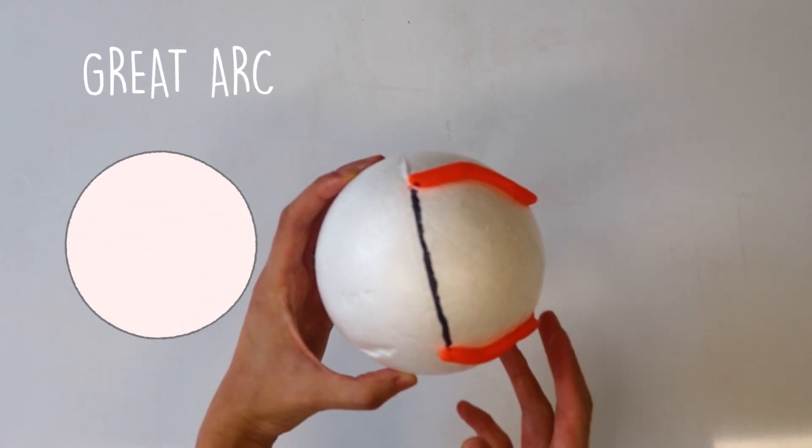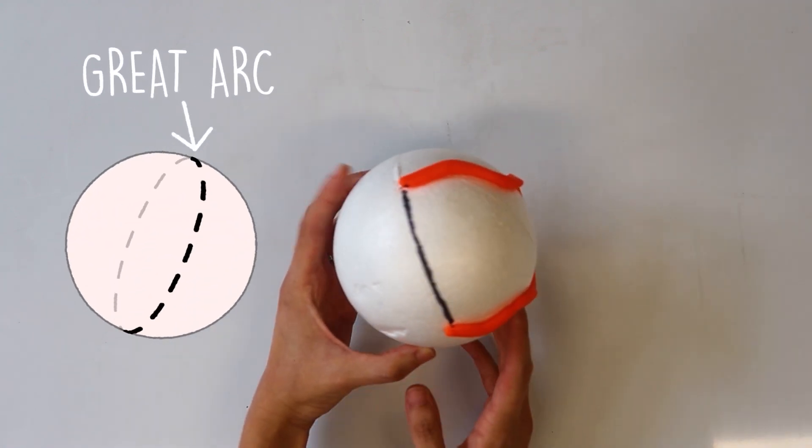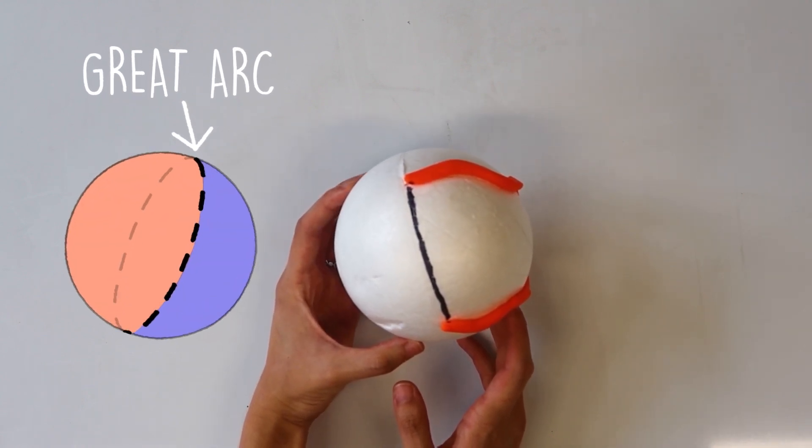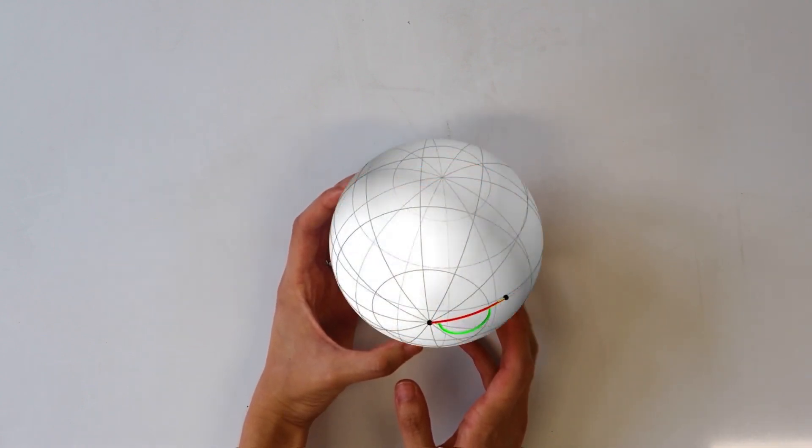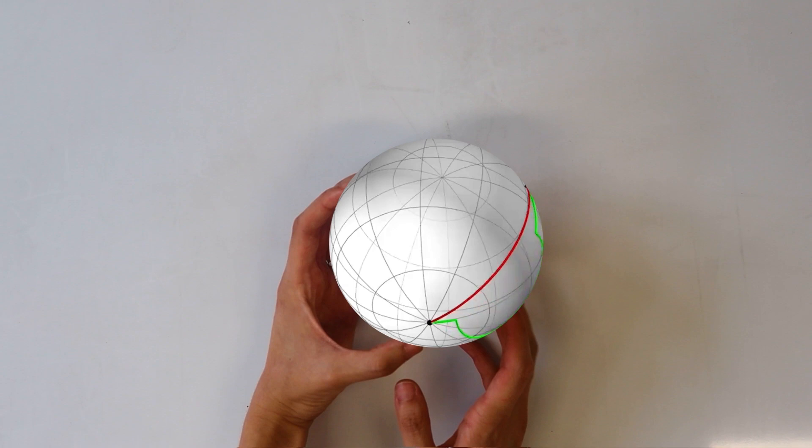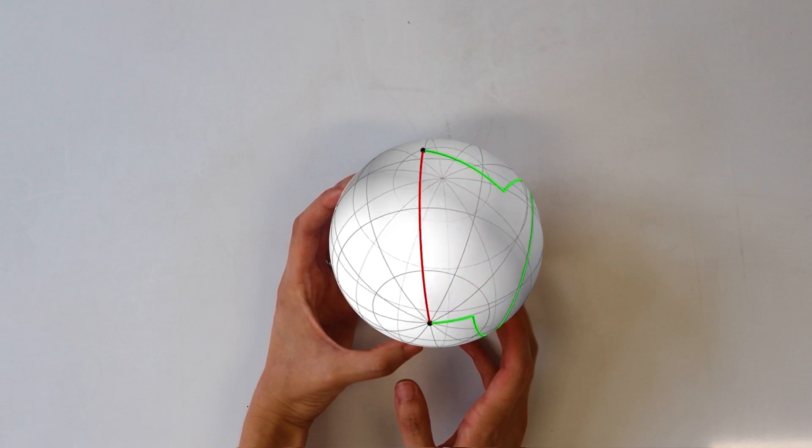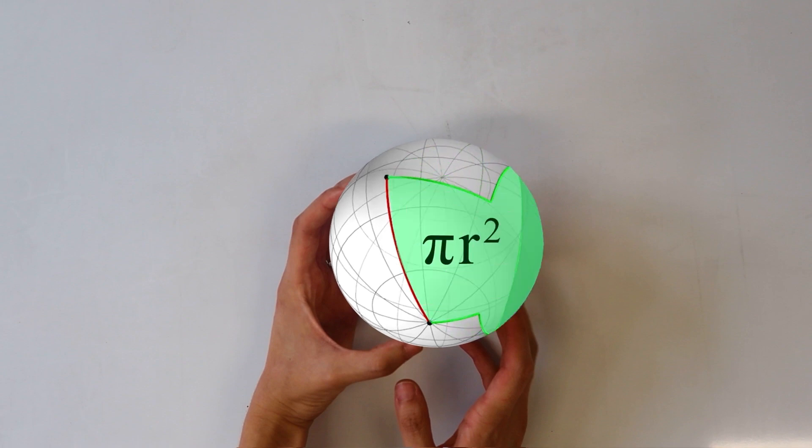A great arc is an arc such that if you completed it around the sphere, it would divide the sphere into two equal halves. Because of some fancy differential geometry, you will always be able to find a sphere that's the right size such that this enclosed area is one quarter of the surface area of a sphere.